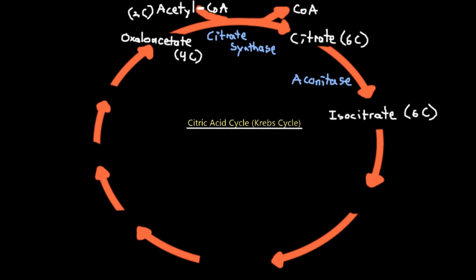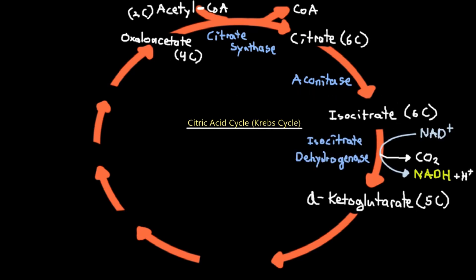In step two, the citrate molecule is rearranged into its isomer isocitrate, also a six-carbon molecule. Isocitrate has the same chemical formula as citrate but with differently arranged bonds. This isomerization is carried out by the enzyme aconitase.